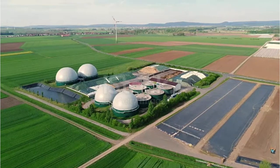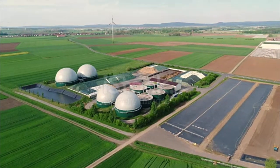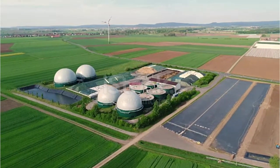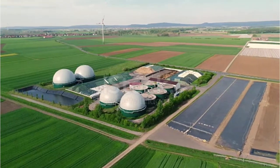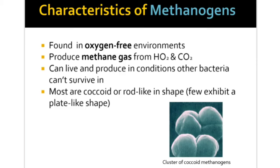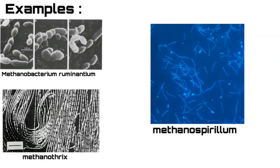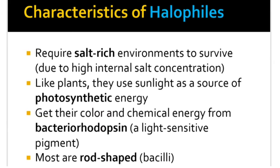Methanogens are commonly used in biogas reactors and biogas plants. Methanogenic Archaea populations play an indispensable role in anaerobic wastewater treatments. They are found in a variety of anaerobic environments and environments rich in organic matter. Methanogens also cause cows to belch. Common examples are Methanobacterium ruminantium, Methanothrix, and Methanospirillum.